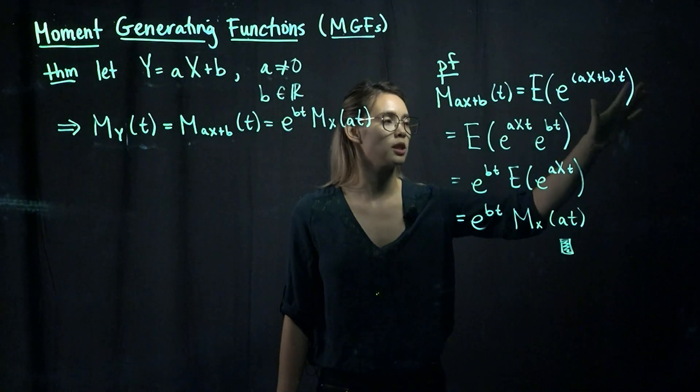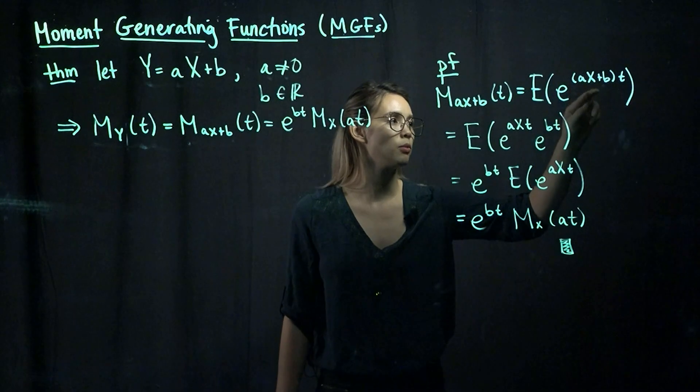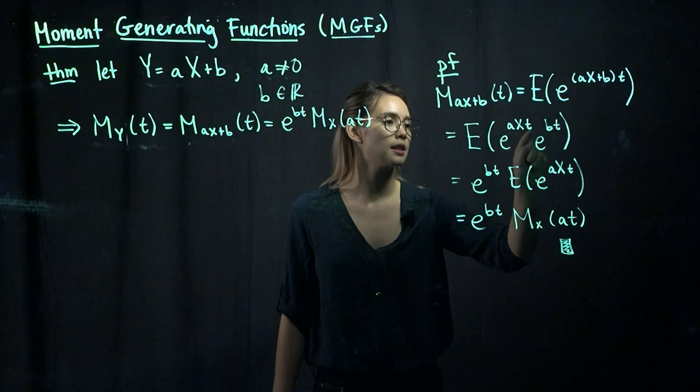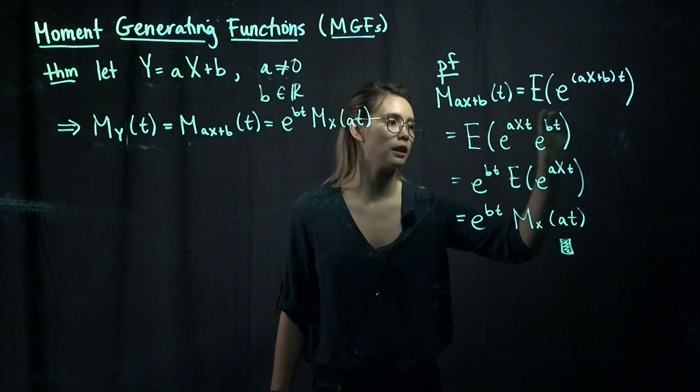And of course, as we said before, when we have e to the sum, we can split that up into a product. So we now get e to the axt times e to the bt, and then the expected value of that whole thing.